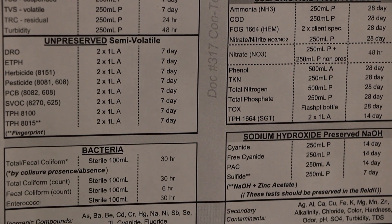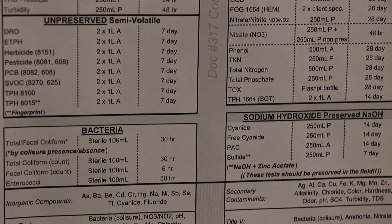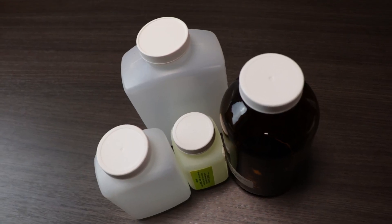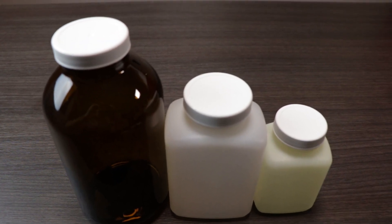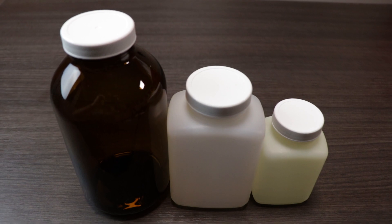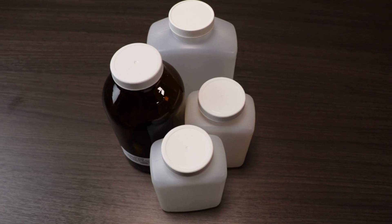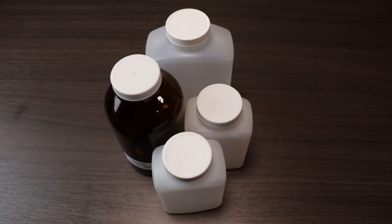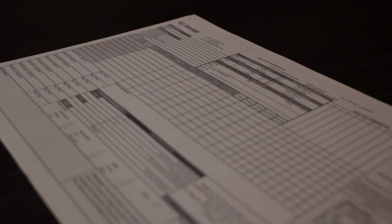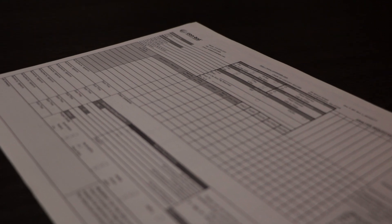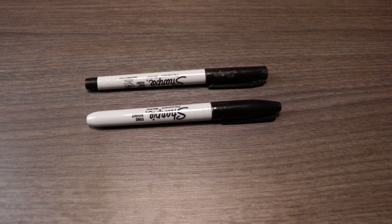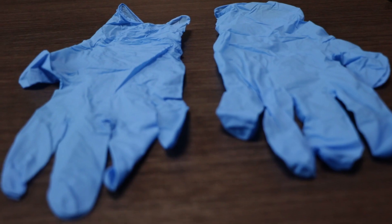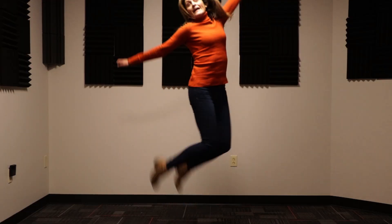Assemble the proper equipment for sampling. You will need clean bottles provided by the lab, or coordinated with the lab, to ensure it is the correct sample size and preservative. Labels, chain of custody, permanent marker, cooler, ice packs, gloves, and rain gear.